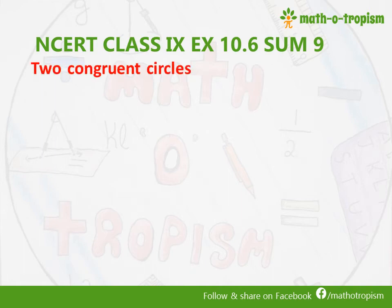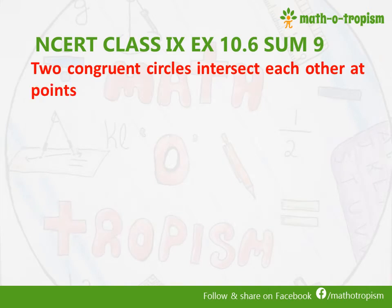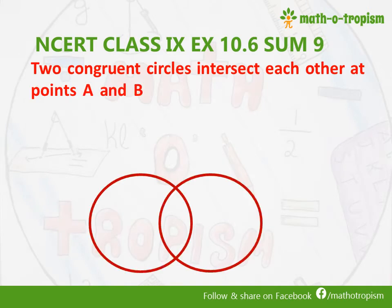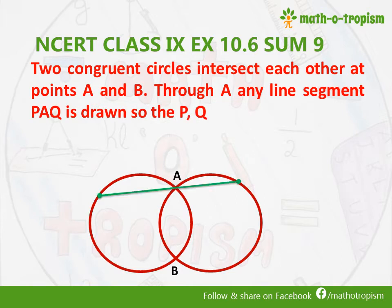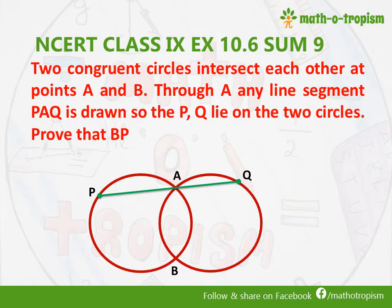Two congruent circles intersect each other at points A and B. We have two circles with equal radius and they are intersecting at A and B. Through A, any line segment PAQ is drawn so that P and Q lie on the two circles. We are going to join BP and BQ and prove that BP is equal to BQ.